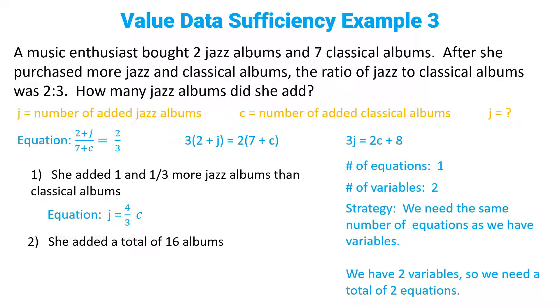Statement one says she added one and one-third more jazz albums than classical albums. In math, that means J equals four-thirds C. We said we needed one more equation in order to solve for J, and we got one more equation. That's sufficient.